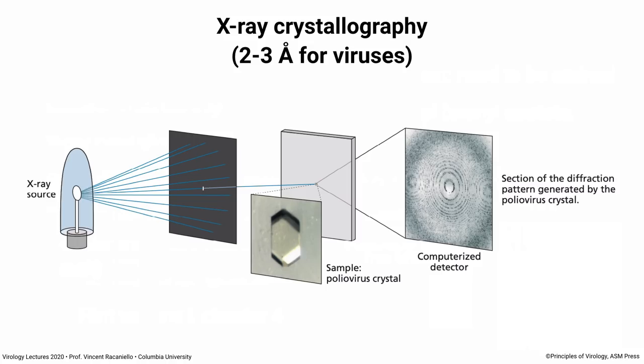X-ray crystallography now gives you much higher resolution — you can get two to three angstroms. Just maybe 40 years ago, this became possible with viruses. Initially it was done with proteins — myoglobin was one of the first proteins crystallized. Then it became possible with viruses only because computers were developed to handle the massive data sets generated. In the old days, you had to get your virus to form a crystal — you would purify tons of virus and figure out conditions for it to crystallize, which often took a long time and sometimes didn't work.